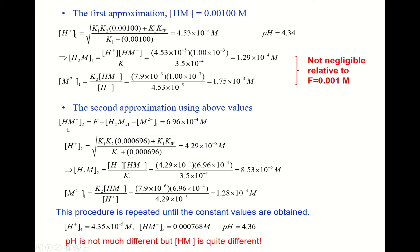Since the true concentration of HM⁻ is not what we assumed, we use the mass balance equation to recalculate [HM⁻]. The second approximation gives [HM⁻] = 6.96×10⁻⁴ molar. Substituting this into our pH equation, we get a second proton concentration of 4.29×10⁻⁵ molar — different from the first calculation.